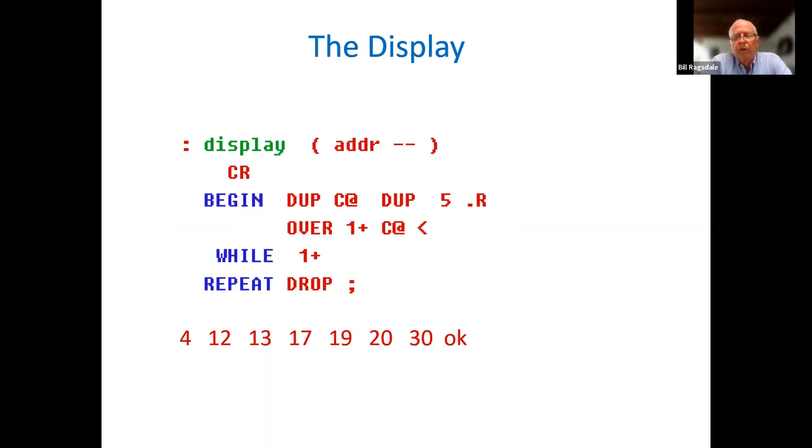It's a characteristic of Forth that when you write a program, it's very nice to write a diagnostic routine to support it right at the beginning. So from the very start of your program activity, you have a way to display your output. In this case, the word DISPLAY does that. We give it the starting address of one of these substrings and it will display it. A CR generates a new line on the screen display. And then a BEGIN WHILE REPEAT loop goes across the substring number by number.